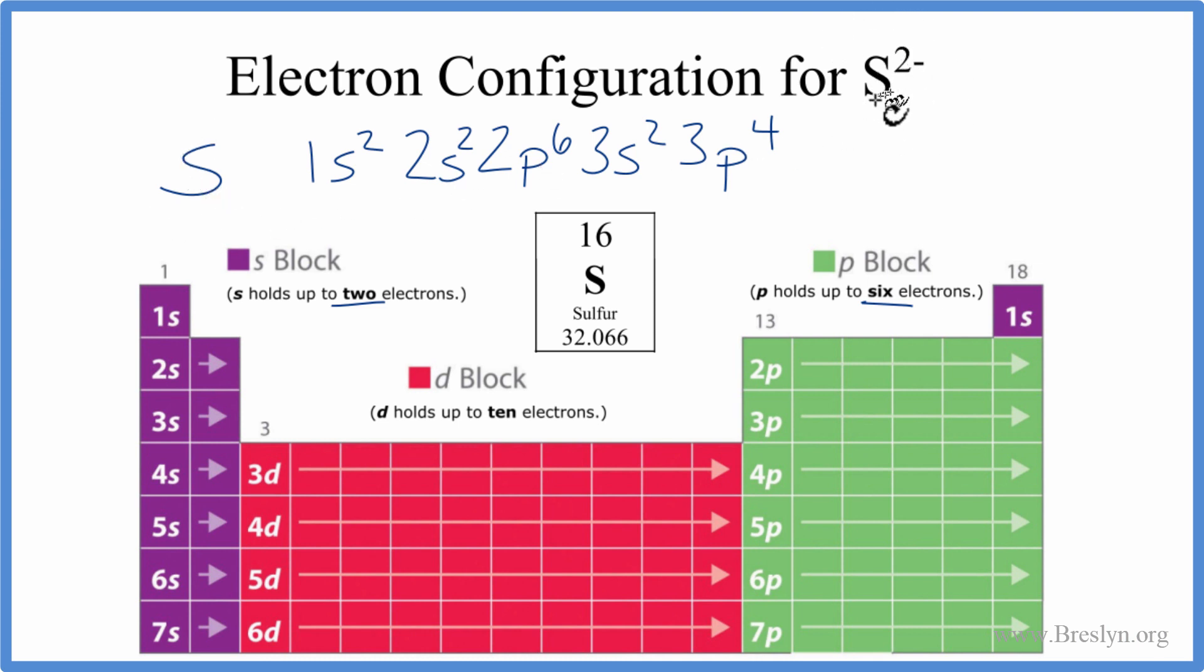We wanted the sulfide ion, though, S2 minus. When you have the minus up here, that means it's a negative ion, and it gained an electron. So the sulfide ion, that has a 2 minus, it gained two electrons. So we're just going to add two more electrons here in the 3p orbital. So that'll give us 3p6.